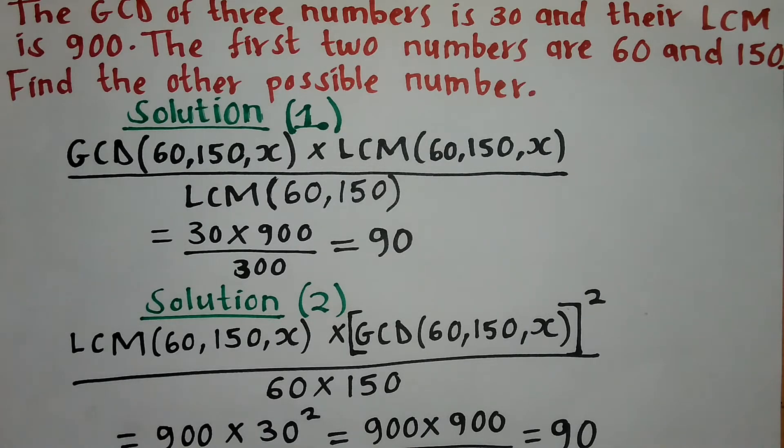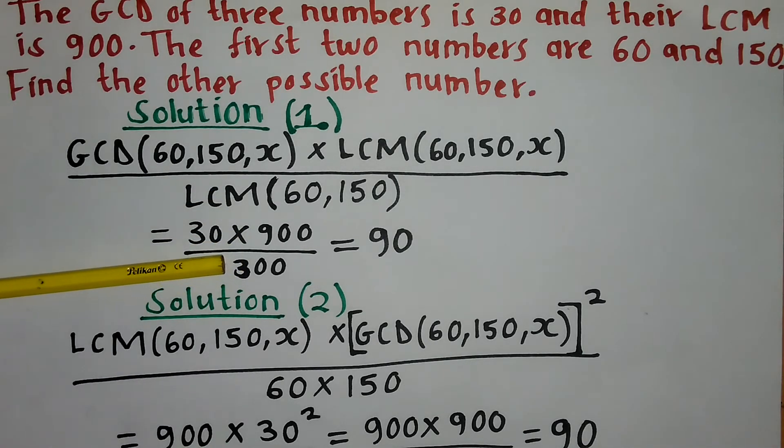And the LCM of the two given numbers. In this case, you're going to work out the LCM of 60 and 150. So in this case, the LCM of 60 and 150 is going to be 300.